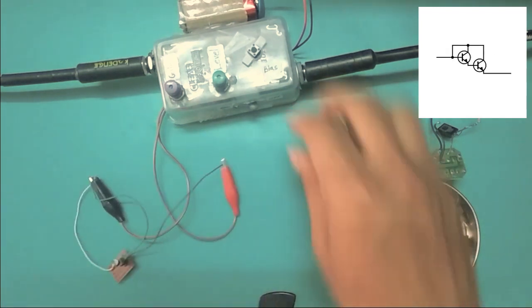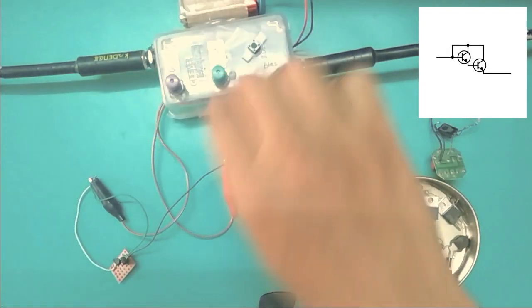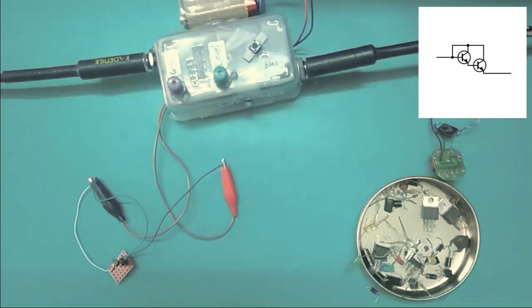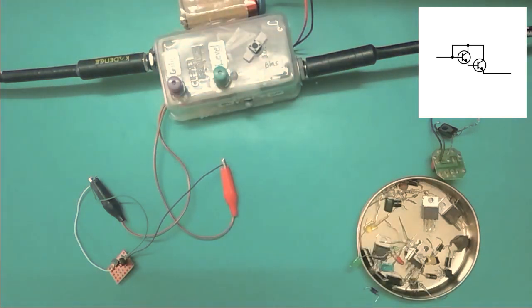All right, so now what I'm doing is this is a Darlington transistor, and I have the black terminal connected to the collector and the base, and the red connected to the emitter.